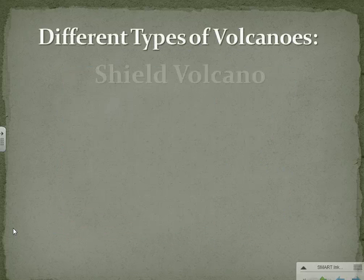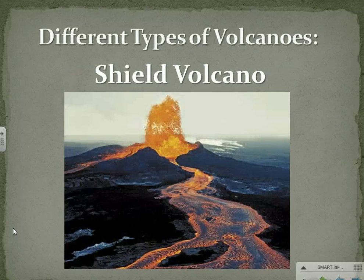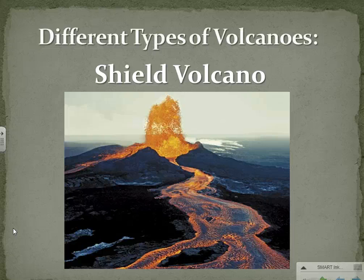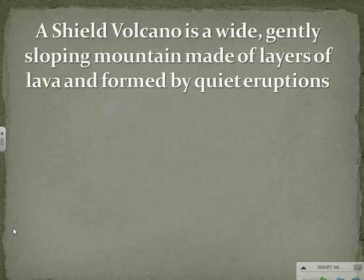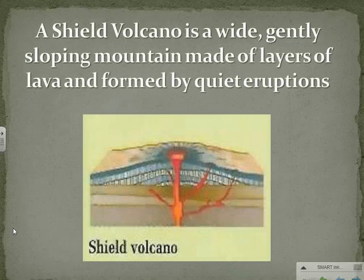Different types of volcanoes. The Shield Volcano is a wide, gently sloping mountain made of layers of lava and formed by quiet eruptions.